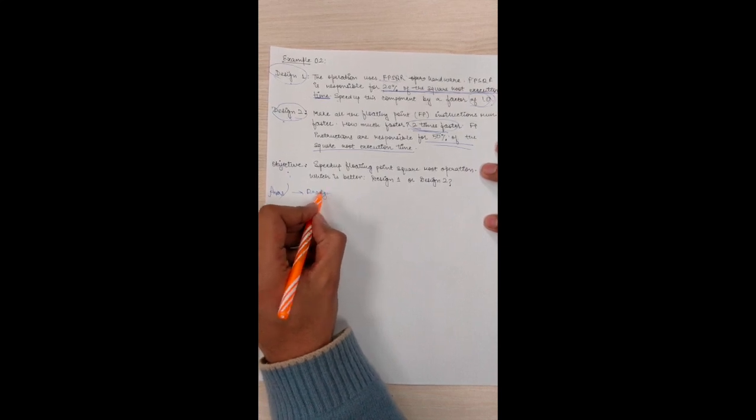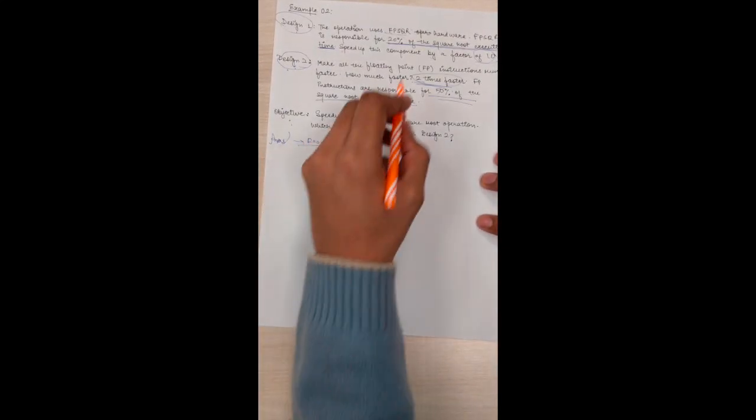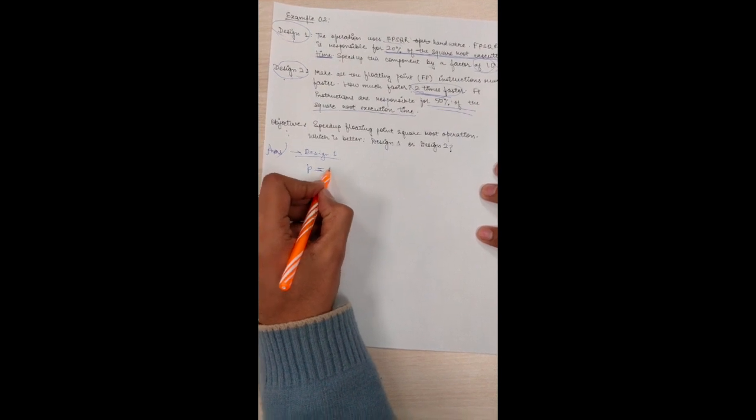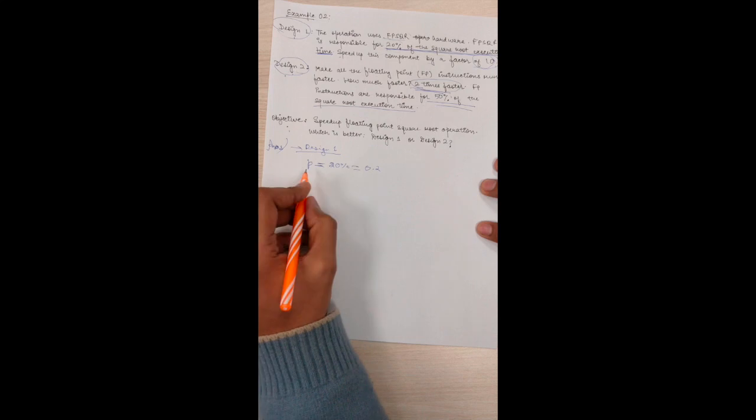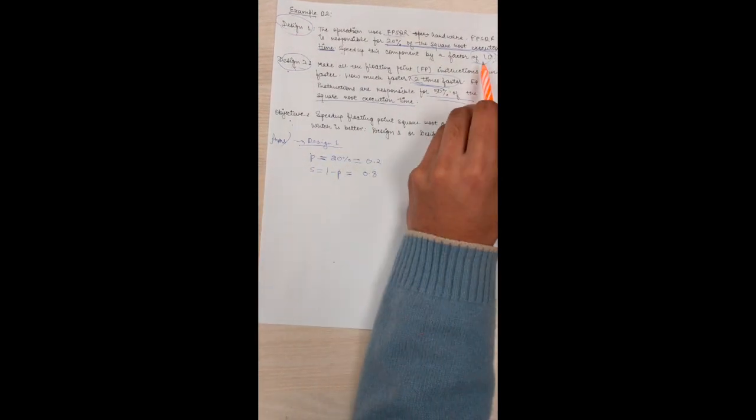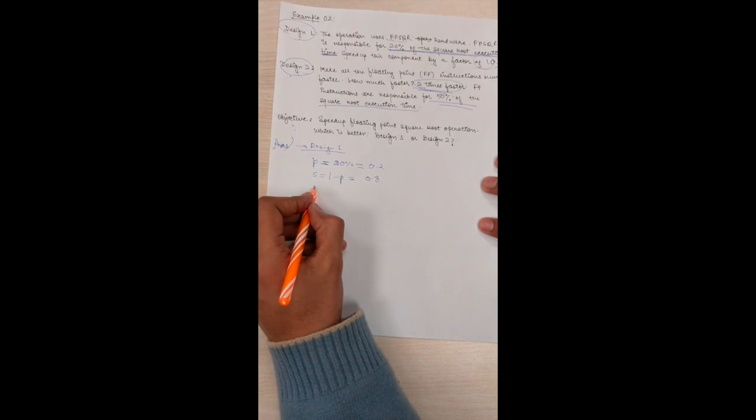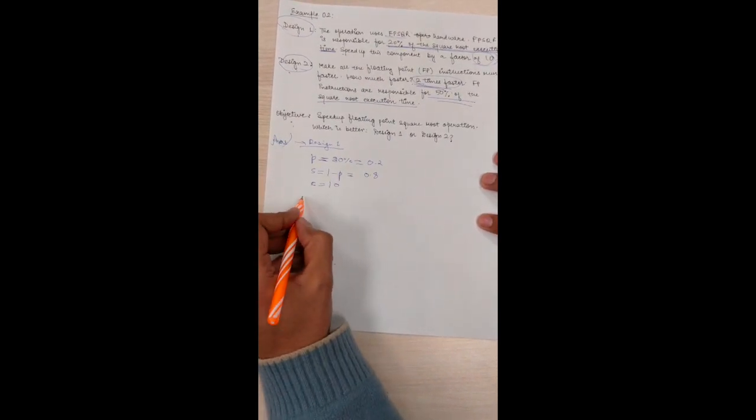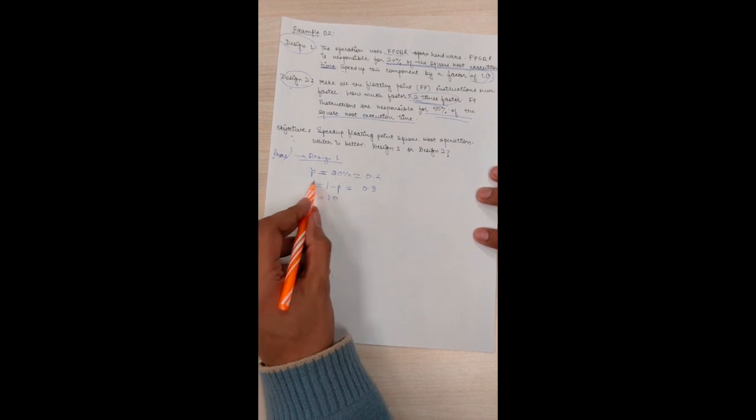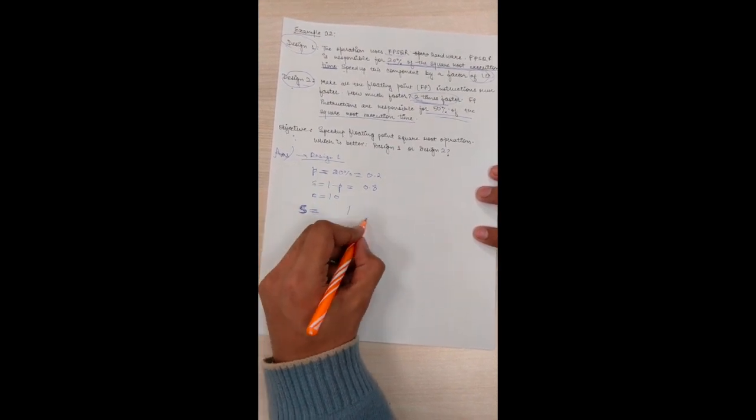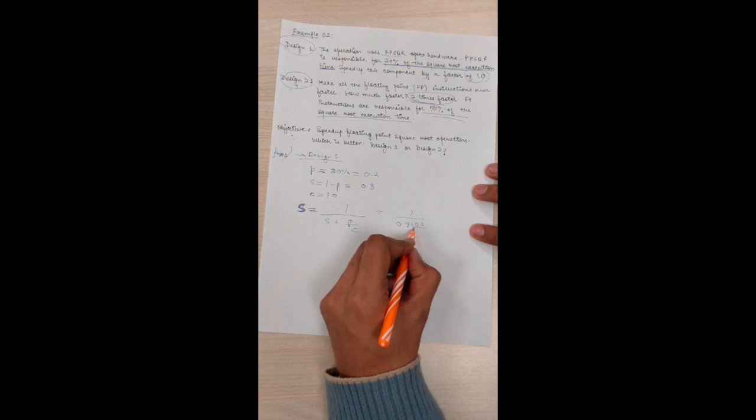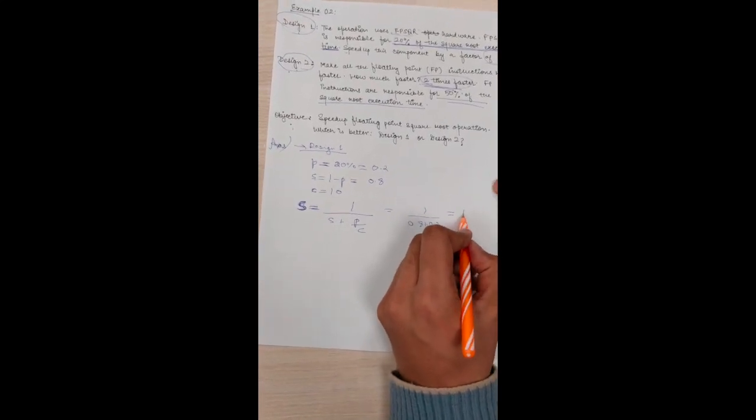For Design 1, we are using 20% of the square root execution time. Hence our parallel processor will be using only 20% of the instructions, which equals 0.2. And then serial will obviously be 1 minus parallel as stated in the previous question. It equals 0.8. And we are speeding up this component by a factor of 10. Factor of 10 means we have to increase the cores by 10. Hence, using Amdahl's law, the speed up will obviously be capital S (not small s). Capital is speed up and small s is serial instruction, which is 1 upon (s + p/c). And it equals 1 upon (0.8 + 0.2/10). And after calculating it, we get speed up equals 1.22.